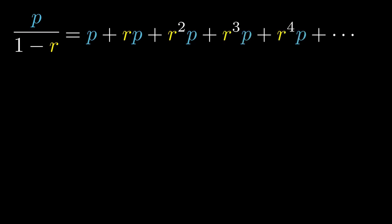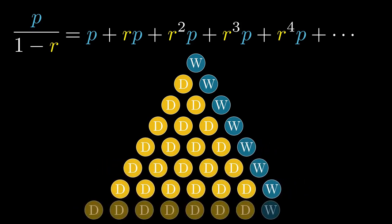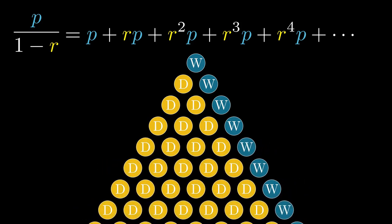In probability terms, what we have done amounts to ignoring the draws and renormalizing the remaining probability. If we expand the 1-D term, the modified probability of player A is just the probability that a streak of draws is followed by a player A's win and likewise for player B.